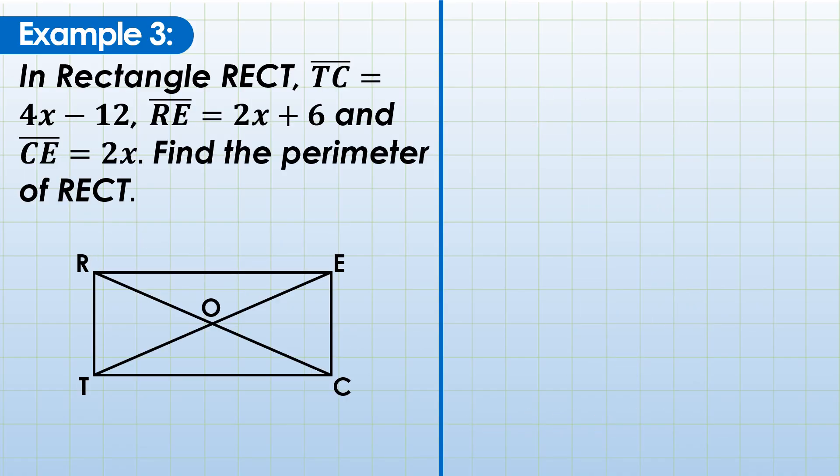Example 3, same figure, but this time the given is TC, which is 4x - 12, one side. And RE is 2x + 6, another side. And CE is 2x, another side. So to make it clearer, label the figure. TC here is 4x - 12. RE is 2x + 6. EC is 2x. Now, what property can we use here? Opposite sides are congruent, because this is also a parallelogram, so we can use property number 1. And recall also that when we say perimeter, it is just the sum of all sides.